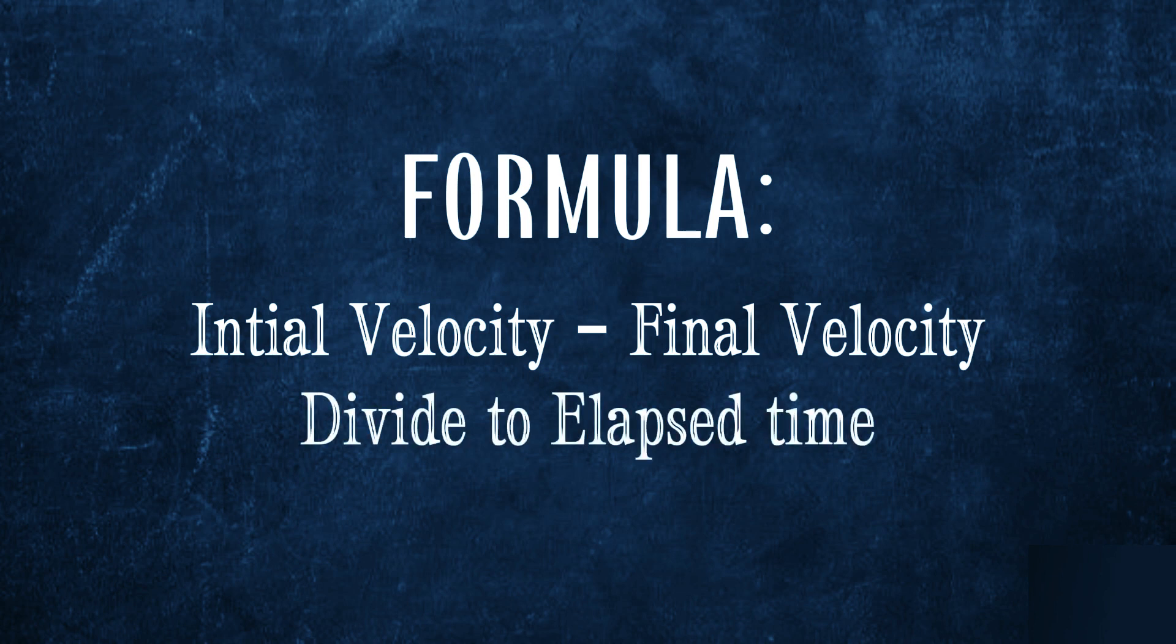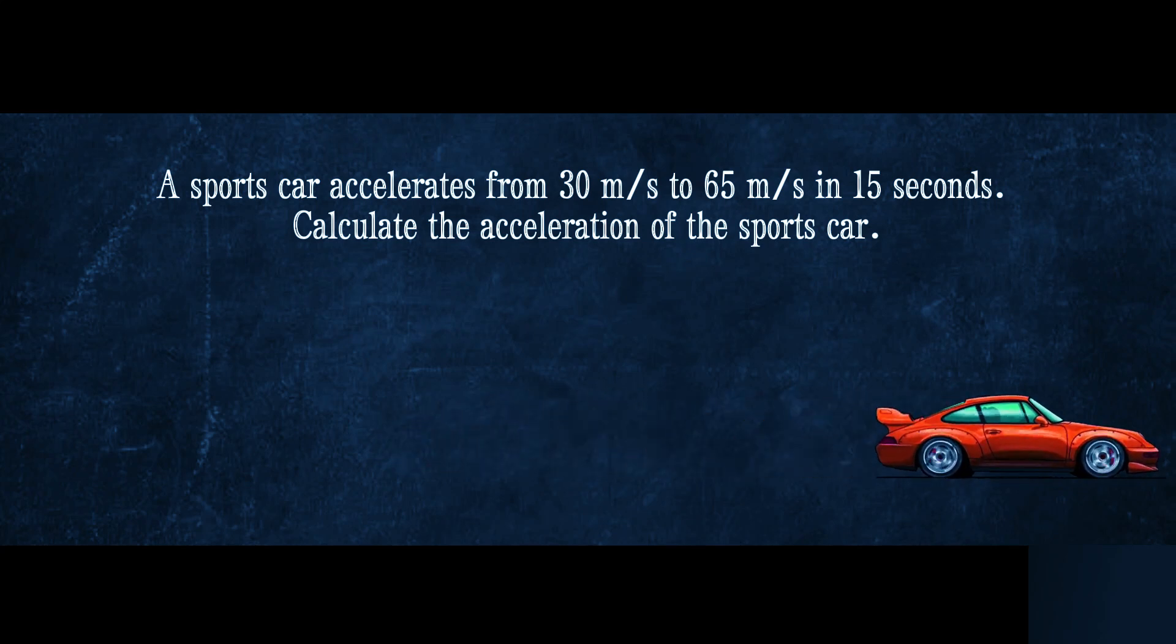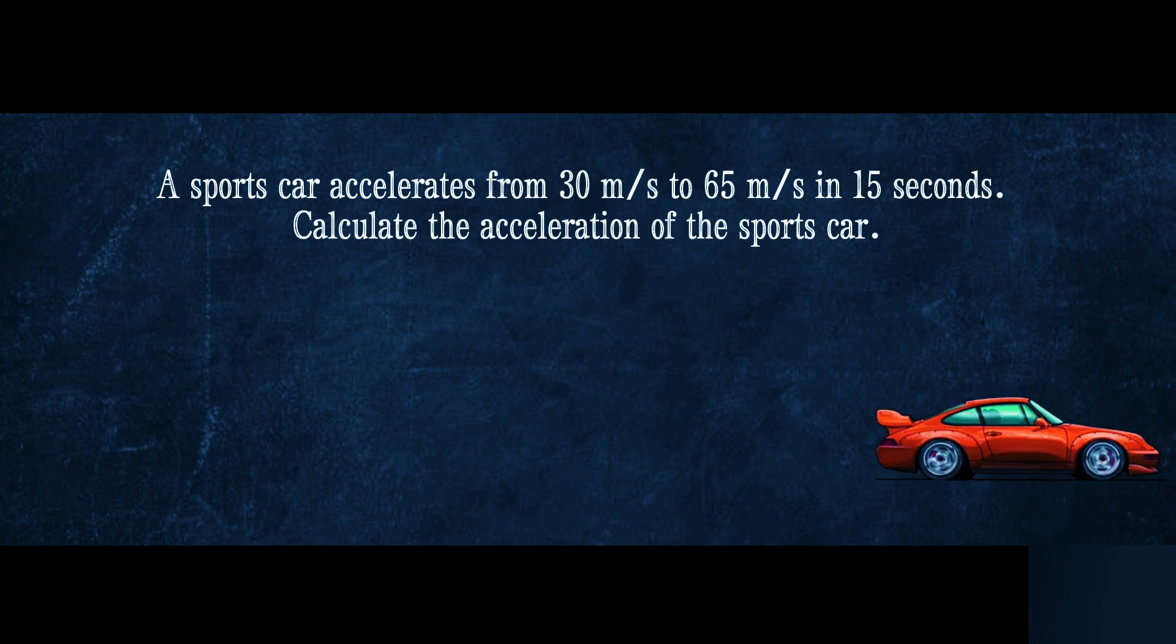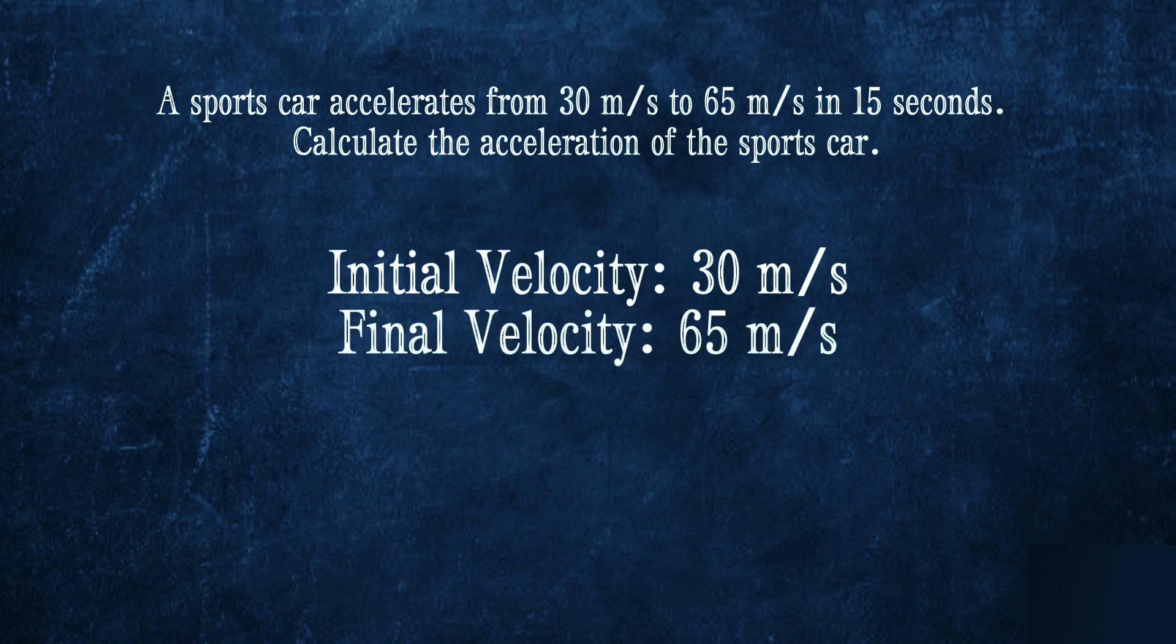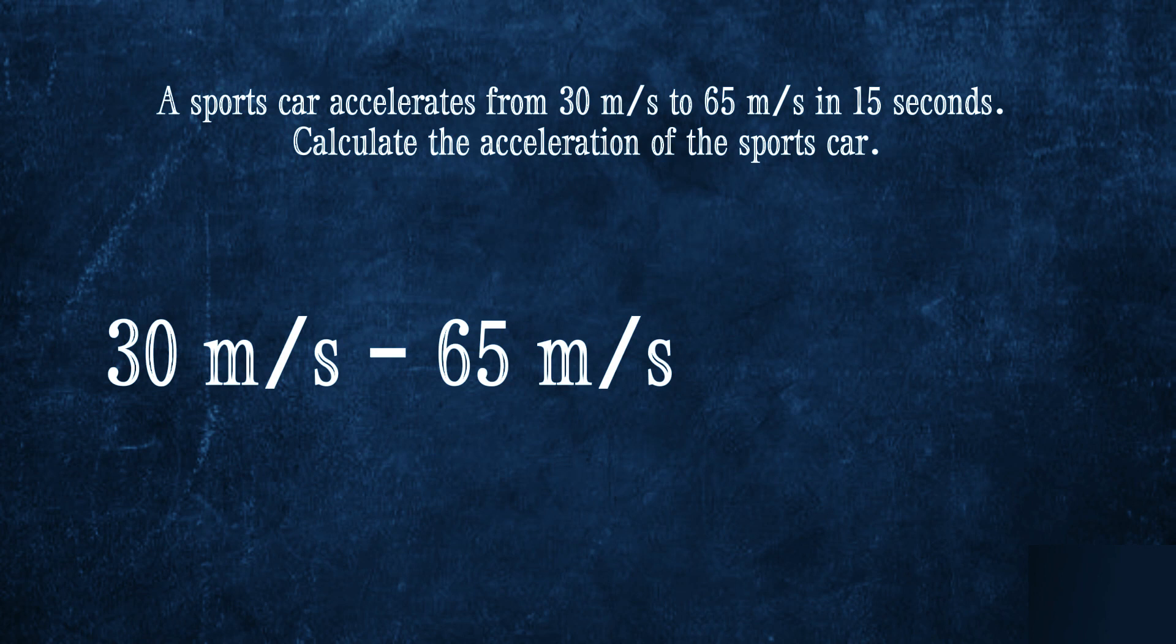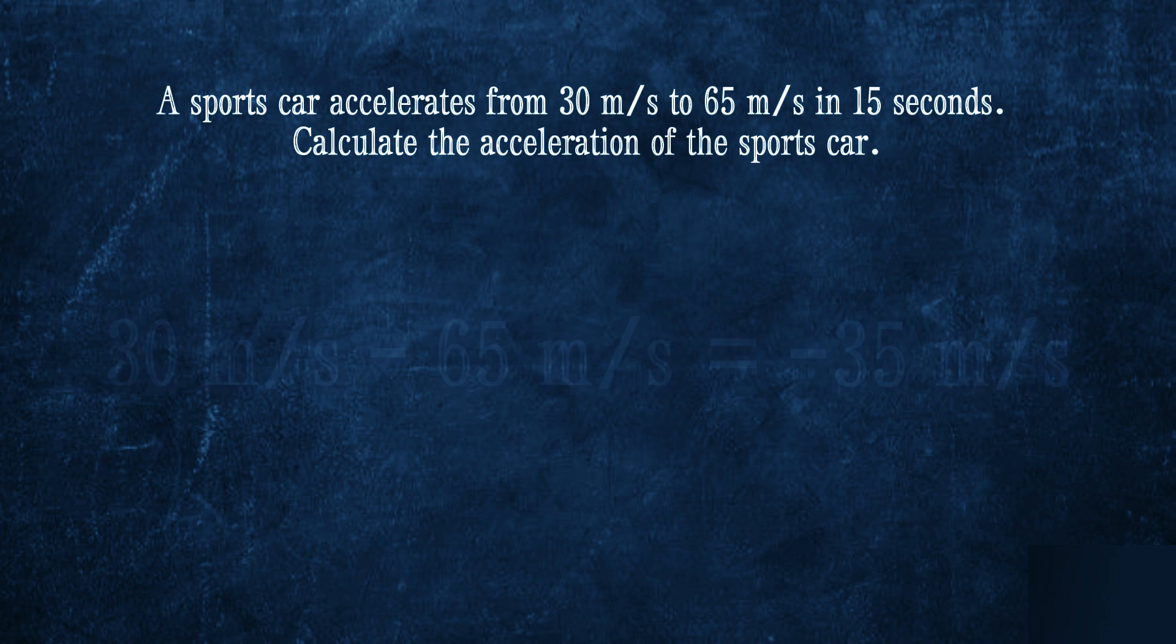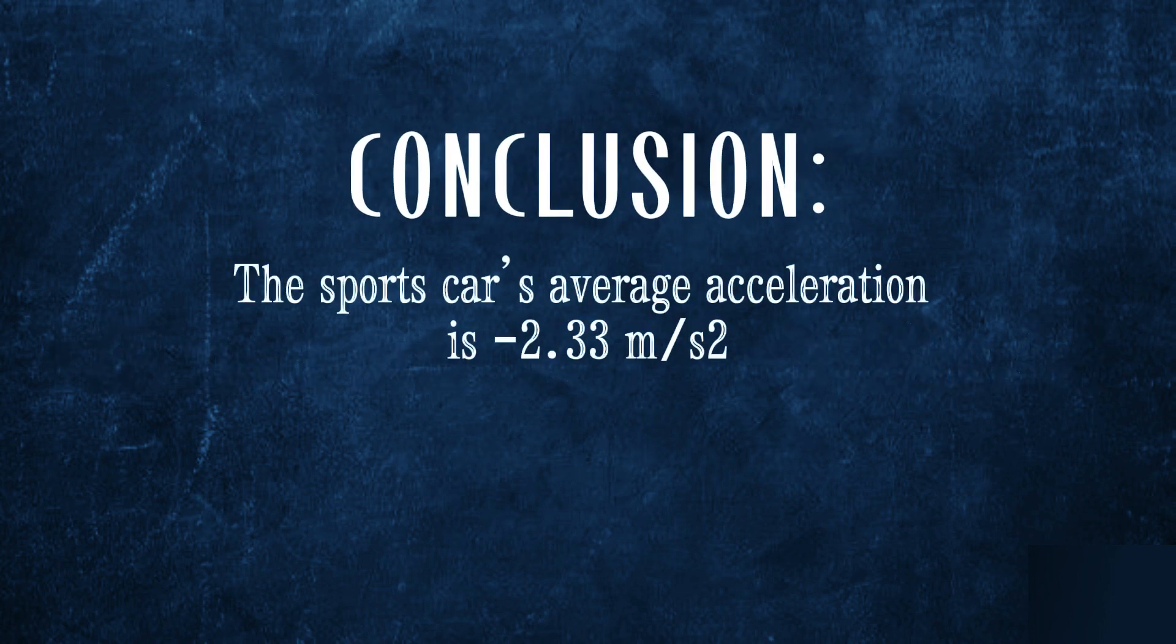In this problem, a sports car accelerates from 30 meters per second to 65 meters per second in 15 seconds. Calculate the acceleration of the sports car. 30 meters per second is the initial velocity. 65 meters per second is the final velocity. 15 seconds is the time elapsed. Note that the initial velocity is usually found after the verb of the sentence. Subtract 30 meters per second from 65 meters per second, then divide the difference by 15 seconds. Therefore, the sports car's average acceleration is negative 2.33 meters per second squared.